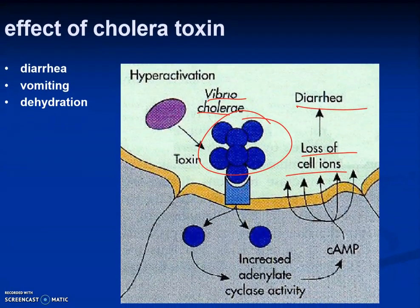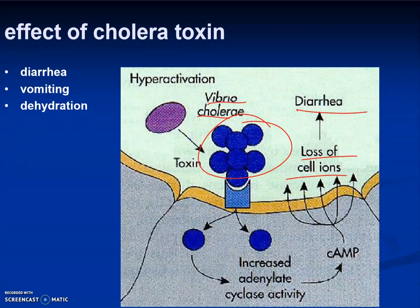The cholera toxin causes massive diarrhea and vomiting. Many children die from dehydration. The diarrhea is so severe it's called 'rice water stools' — extremely watery, depleting all electrolytes and causing massive dehydration, similar in appearance to water used for washing rice.